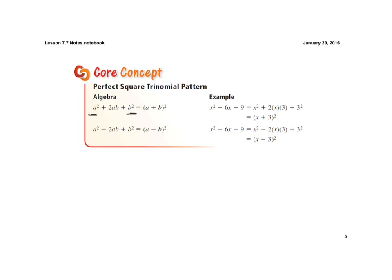So those are the easy parts. The middle term must always be two times the square roots of those last two terms. Notice also that the last terms are always added.